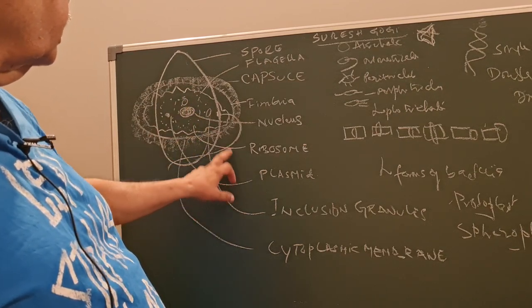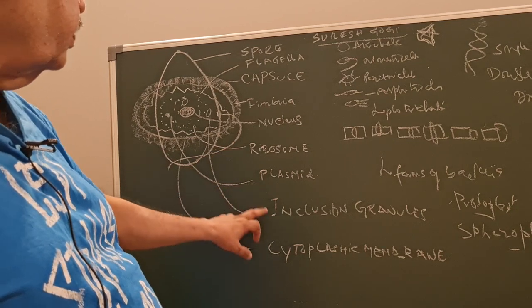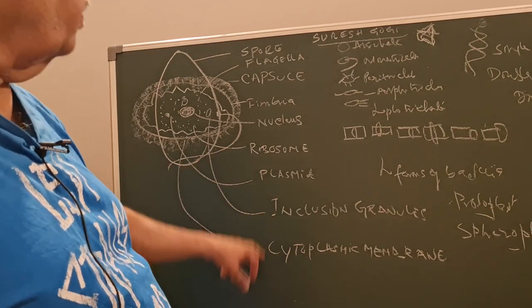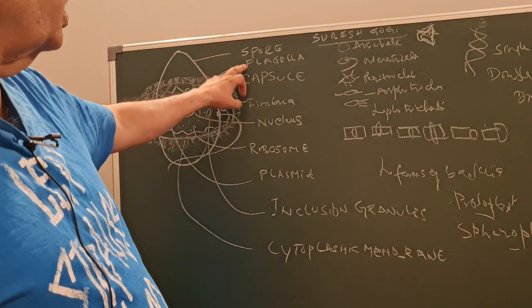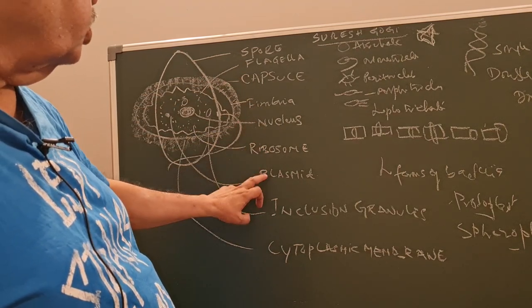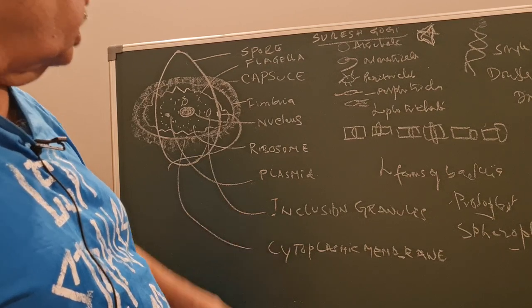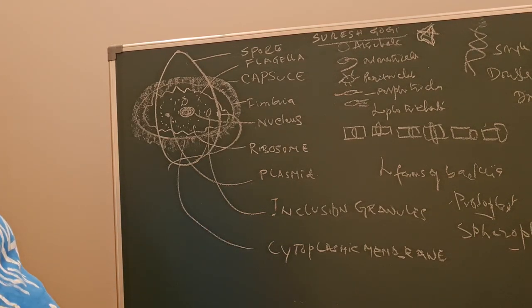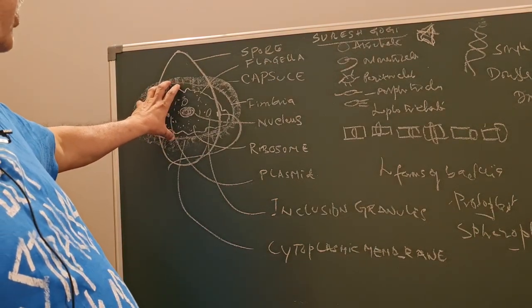There is a bacterial nucleus, inclusion bodies, ribosomes, plasmid, cytoplasmic membrane, spores, flagella, capsule, and nucleus. Now coming to the bacterial cell wall.